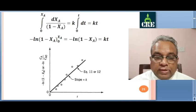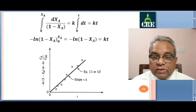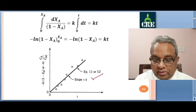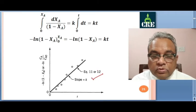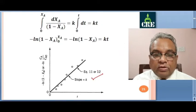We plot a straight line with the best fit line for this data. On the y-axis: minus ln of 1 minus XA, or minus ln of CA by CA0, and on the x-axis: t. So y equals mx, where m is the slope and that gives directly the value of k, the rate constant. So first order rate law: minus RA equals 0.52 into CA is our final rate law.